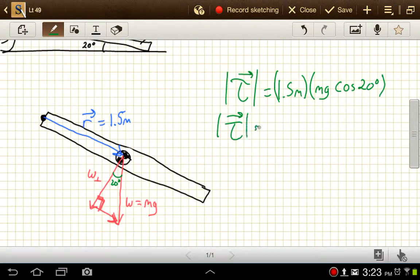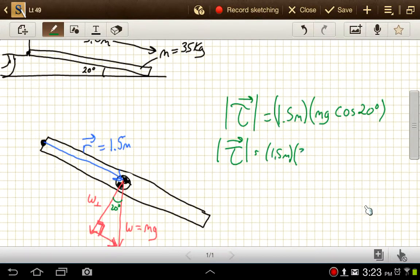So the magnitude for torque, then, is going to be 1.5 meters times, let's say, 35 kilograms, times 9.8 meters per second squared, times the cosine of 20 degrees. And the magnitude for torque, then, is equal to, let's calculate that, 1.5 times 35, times 9.8, times the cosine of 20. And we get 483, and the units on that are Newton meters.